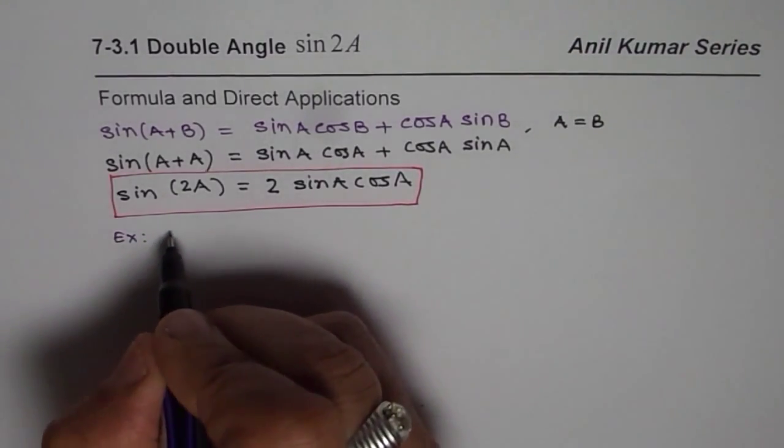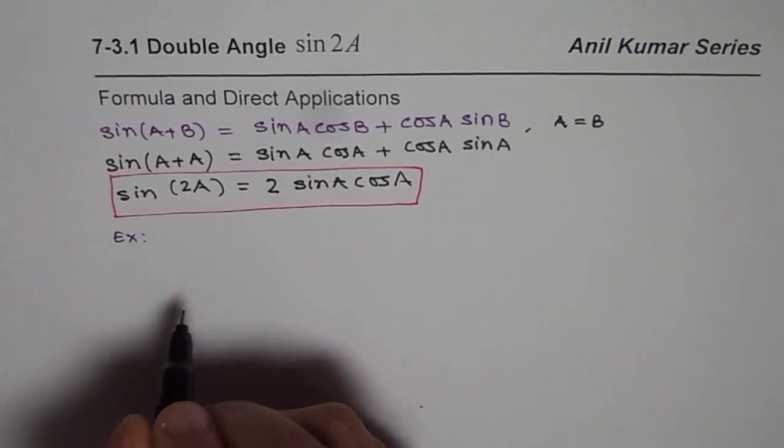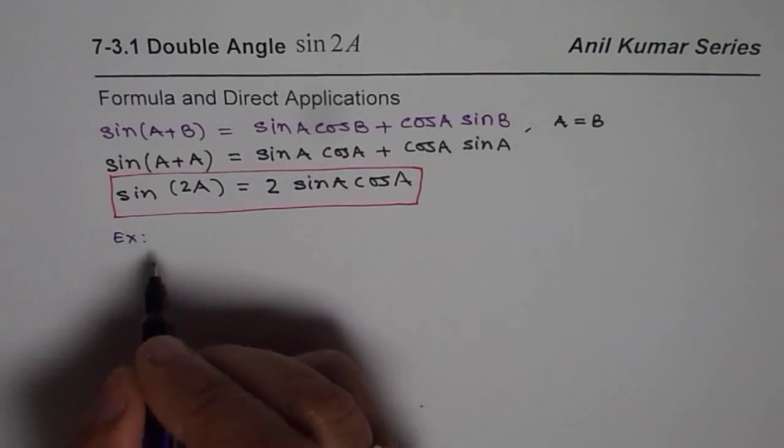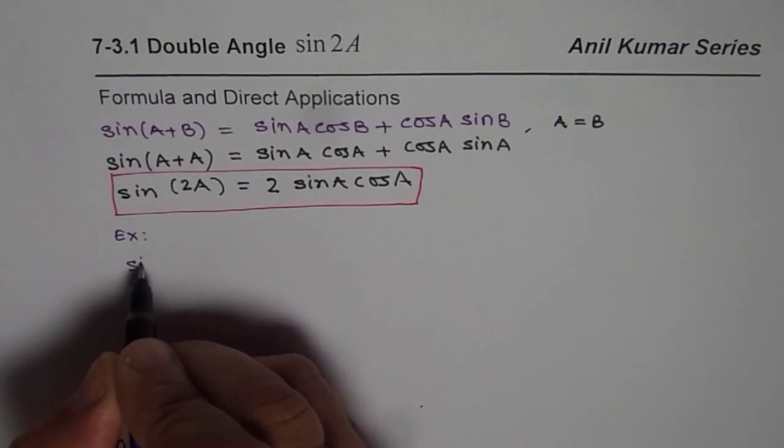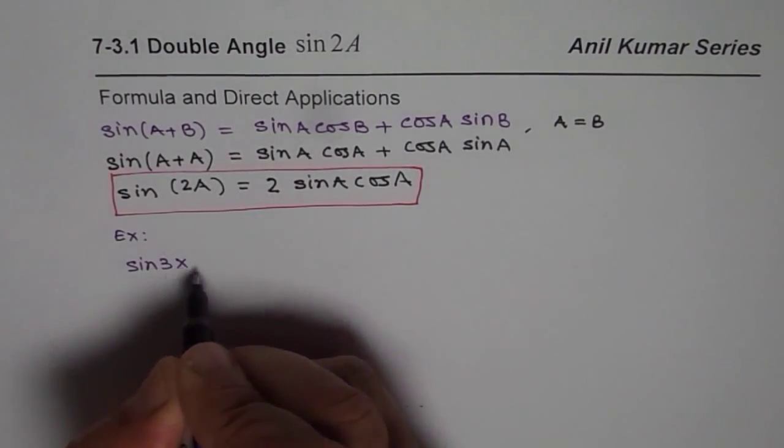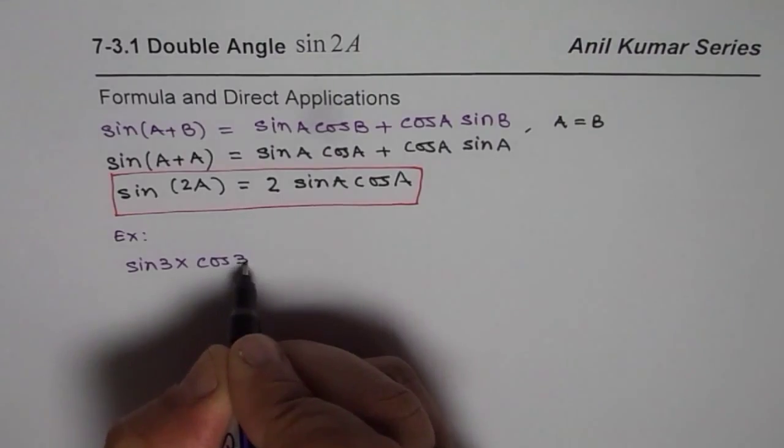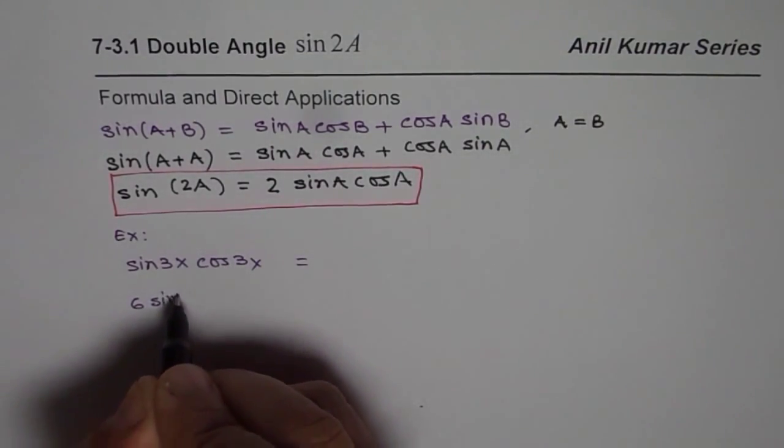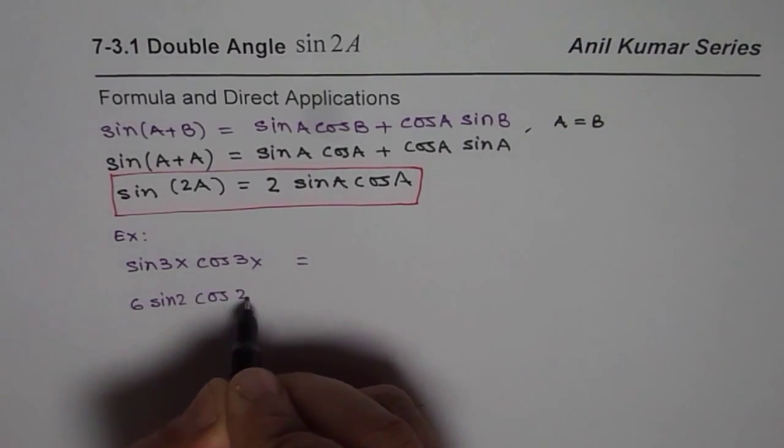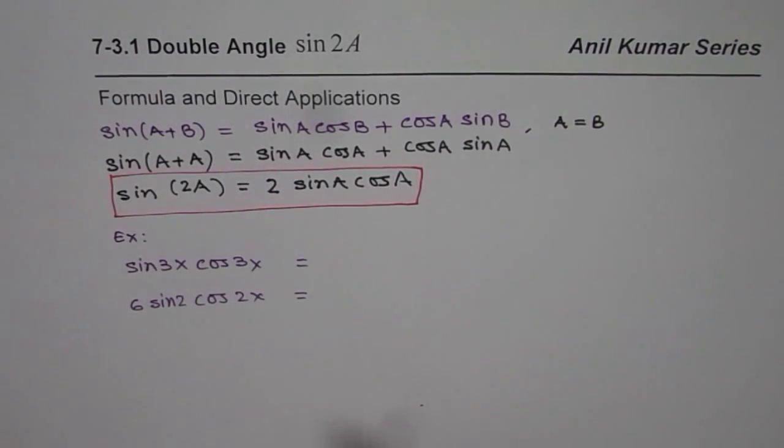Write the following expressions in terms of single trigonometric ratio. The expressions could be, for example, sine of 3x cos of 3x is equal to what? Or it could be 6 times sine of 2x cos of 2x is equal to what.